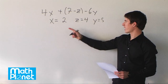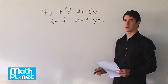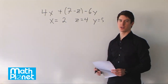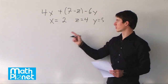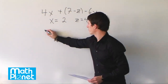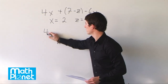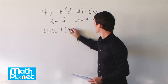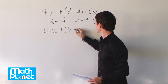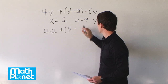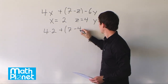So here we have our values of x, z, and y, so we can just plug in and evaluate for those three values. So here we have 4 times 2, plus 7 minus z which is 4.